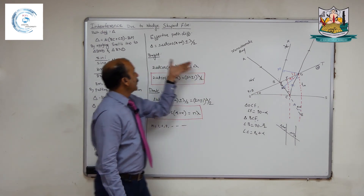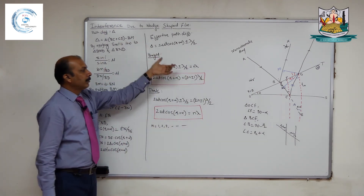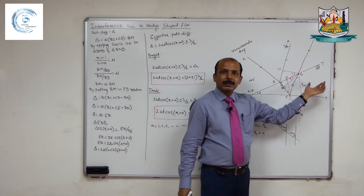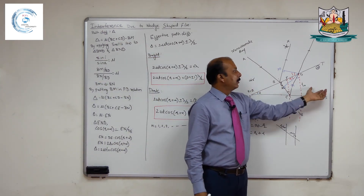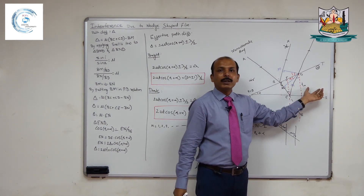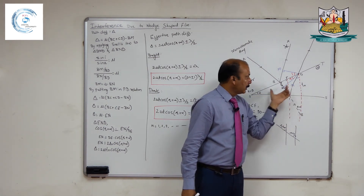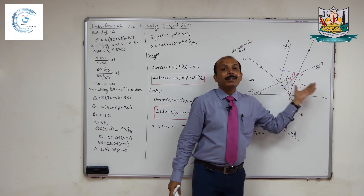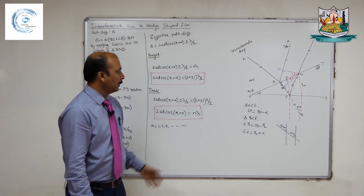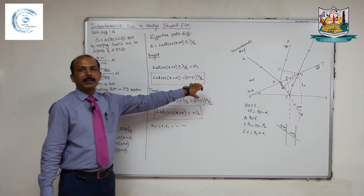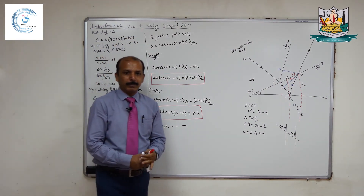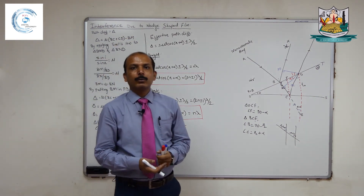This experiment — interference due to wedge-shaped film — can be used to measure the thickness of human hair or thin paper, and also to check the flatness of surfaces. These are the main applications of interference due to wedge-shaped film. Thank you very much.